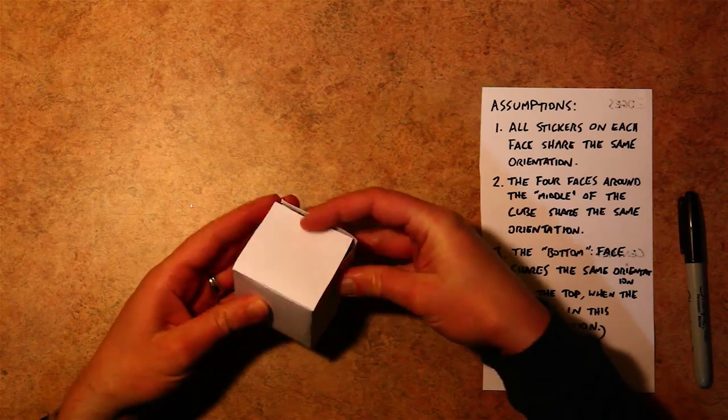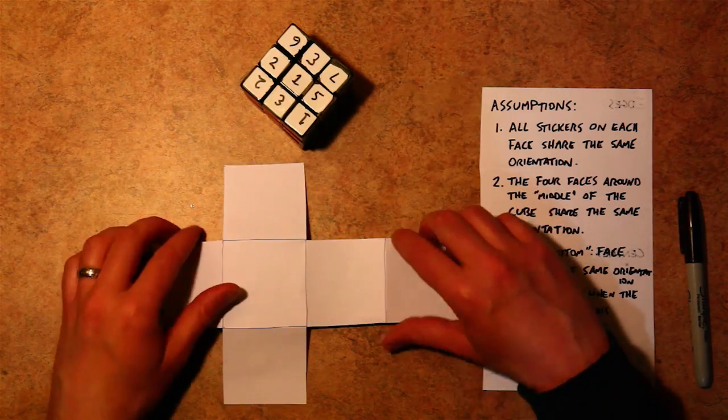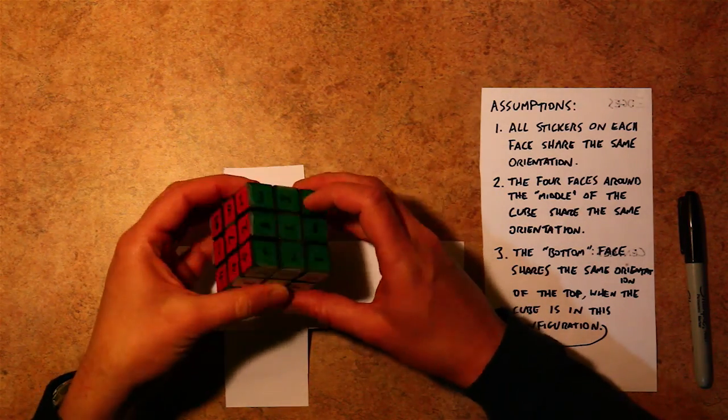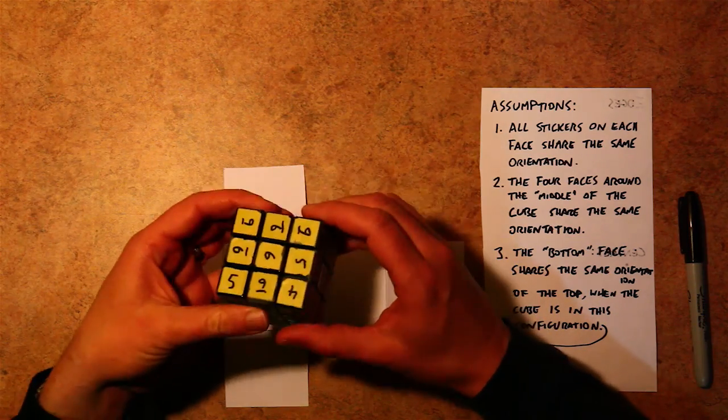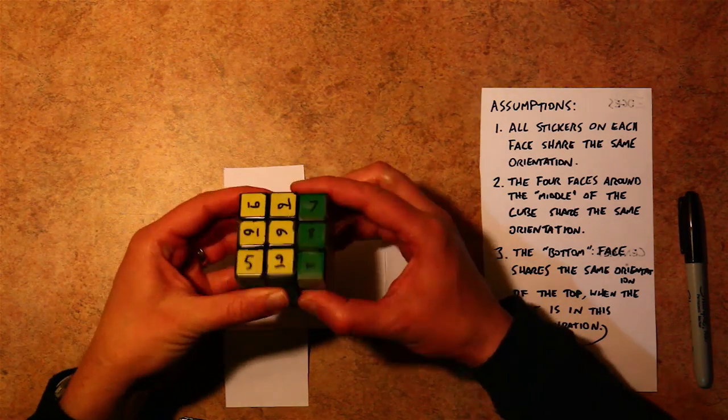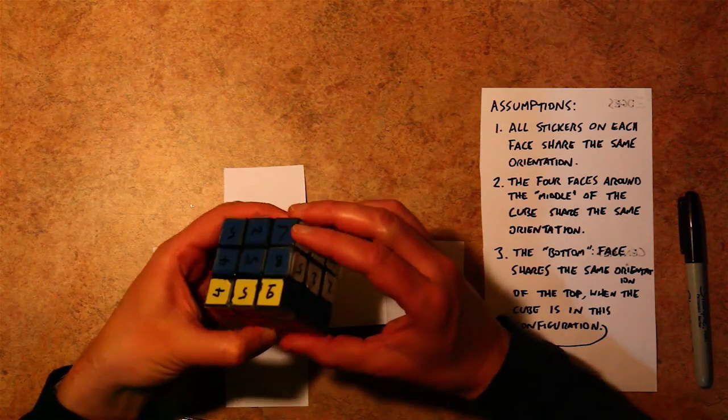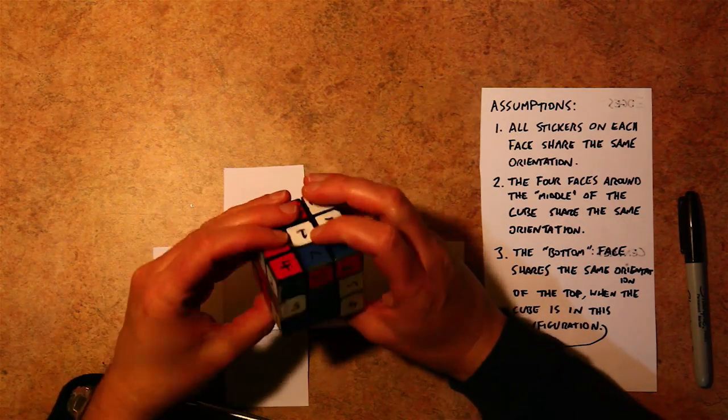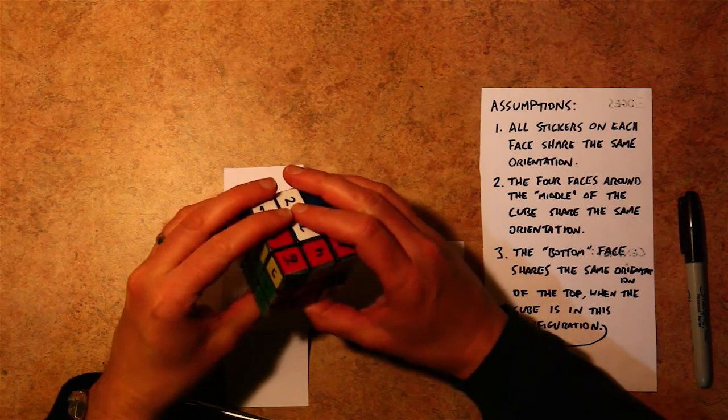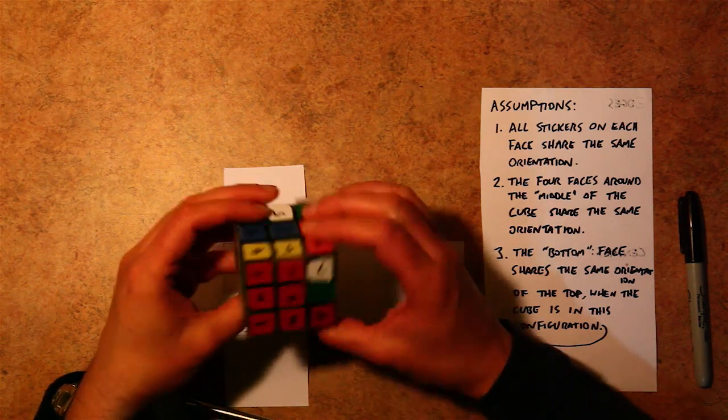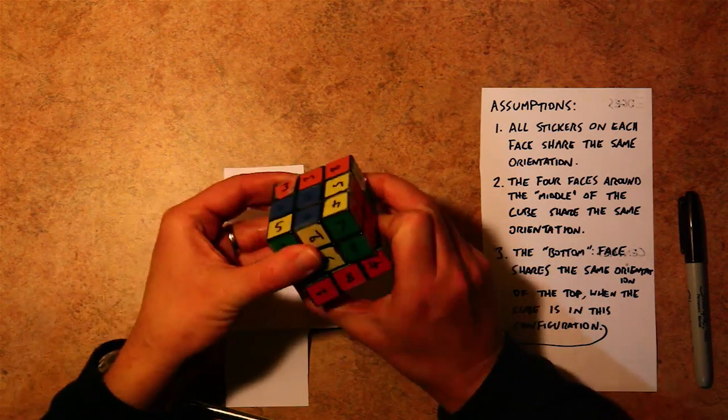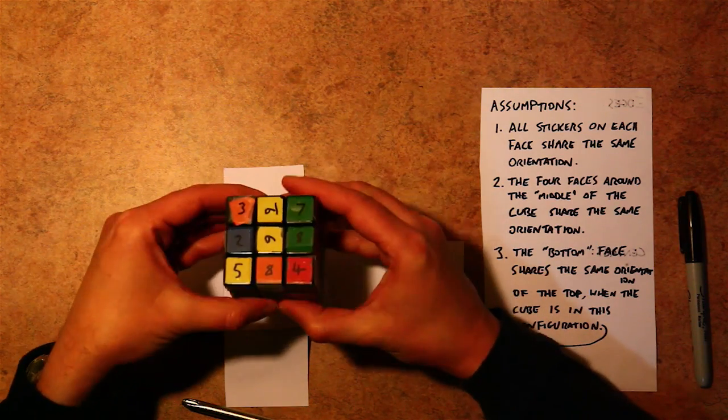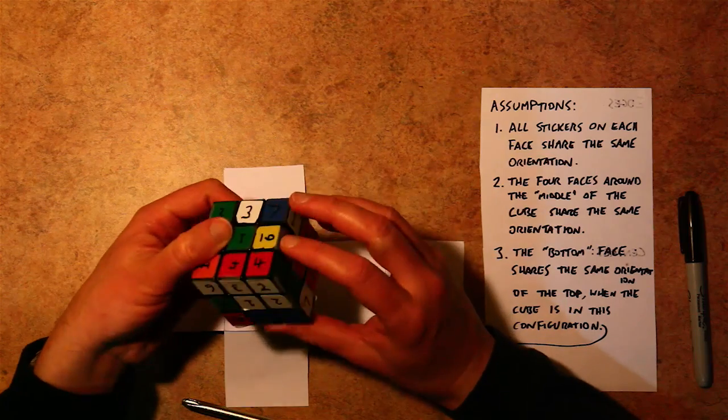We're going to start with the corners. Now the corners, we're solving this based solely on orientation of the stickers. So as we go through, we'll find the stickers that all belong to the top, and the way you figure out if a corner belongs to the top is if there are two numbers that are side by side based on our assumption number two. So you'll see here we can go through and find four corners that are at the top. For this stage, I find it helpful to actually put the corners in place around the top of the cube.